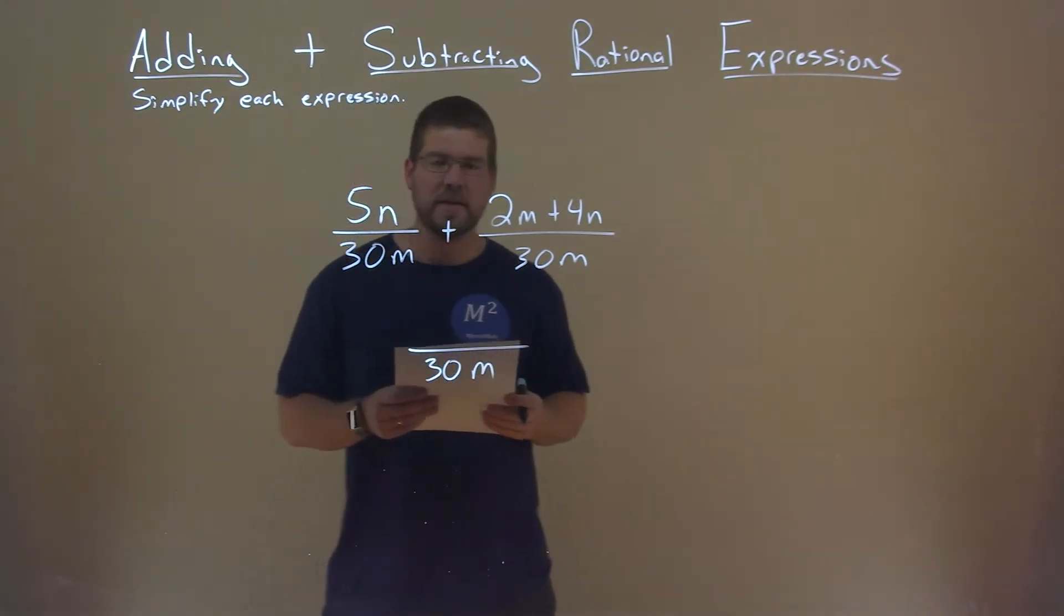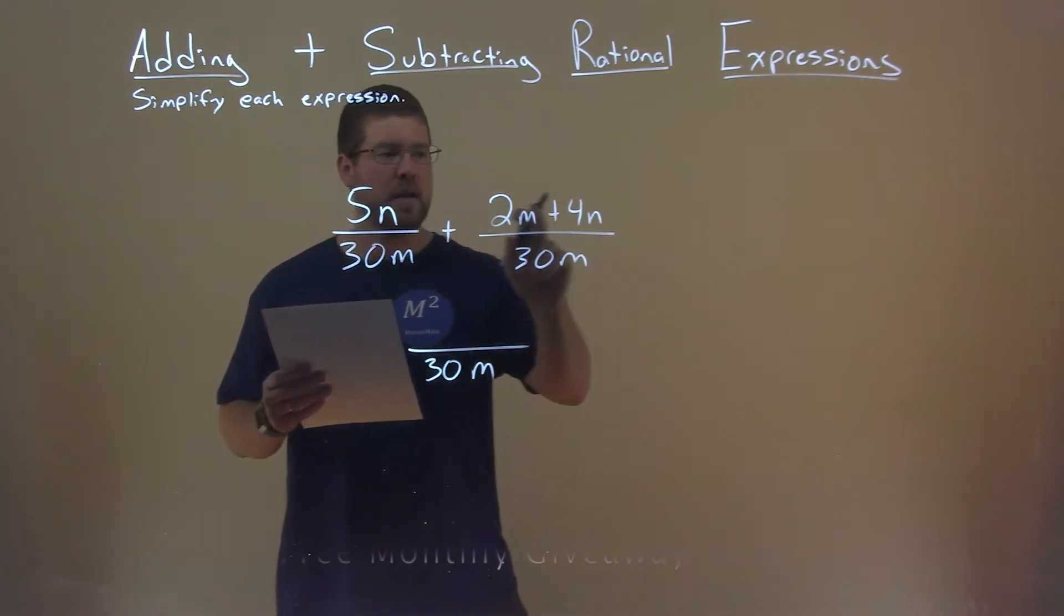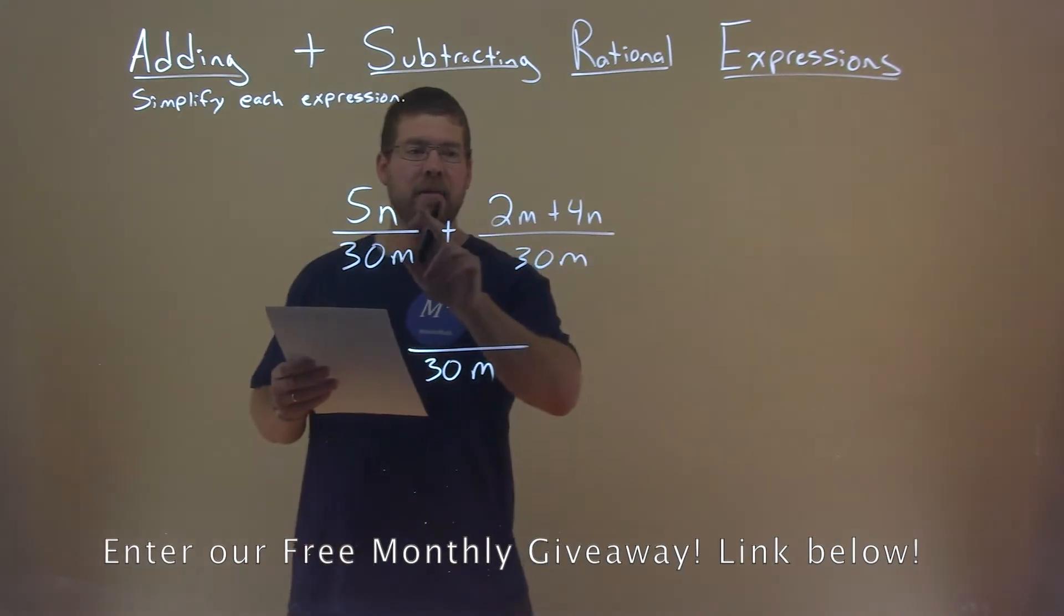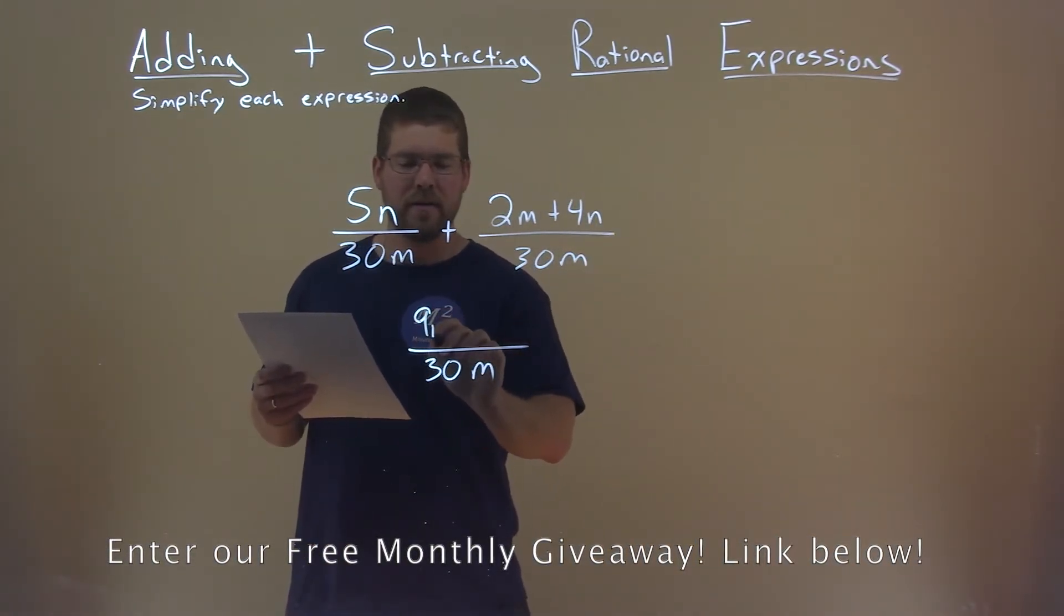Now we have to add our like terms in the numerator. We have 5n and 4n, adding those together becomes 9n.